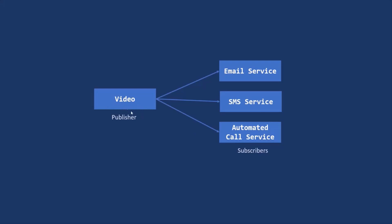And this is what the Publish-Subscribe Design Pattern is. Here, these three classes are the Observers and this Video class is the Emitter — it is the Publisher. Let's see how we can implement this Publish-Subscribe Design Pattern using Multicast Delegates.